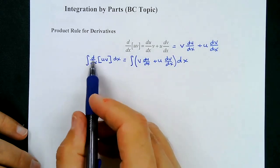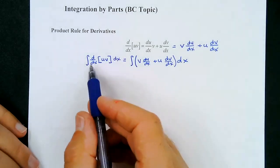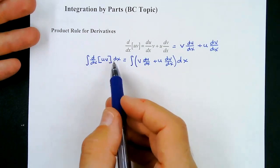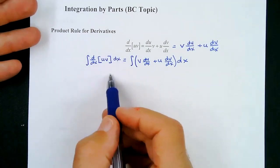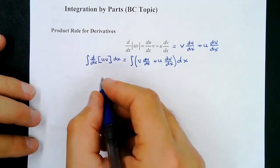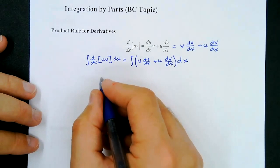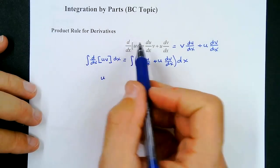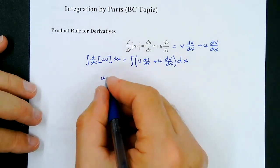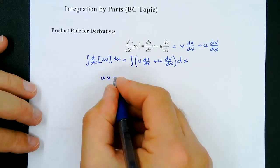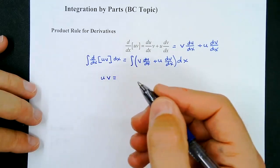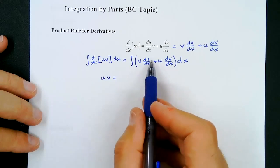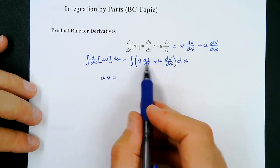On the left side, the dx and the dx undo each other since we're taking the integral — an integral will undo this derivative — so we're left with simply u times v. On the right side, because we have a sum of two things, the properties of integrals say you can break that up.